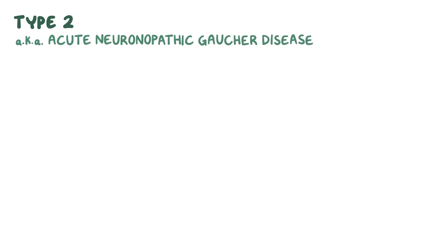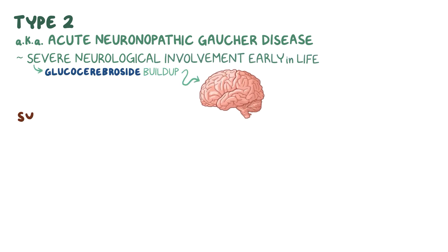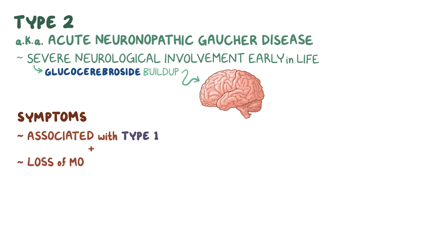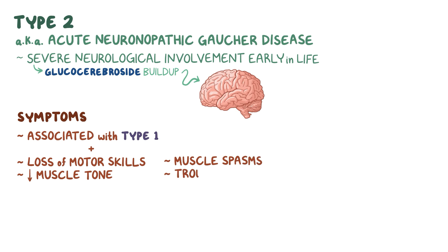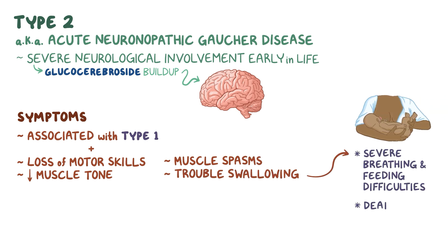Type 2, also called acute neuronopathic Gaucher disease, is characterized by severe neurological involvement early in life due to glucocerebroside buildup in the brain. In addition to symptoms associated with type 1, there is also a loss of motor skills, decreased muscle tone, muscle spasms, and trouble swallowing. This can progress to severe breathing and feeding difficulties and death within the first few years of life.